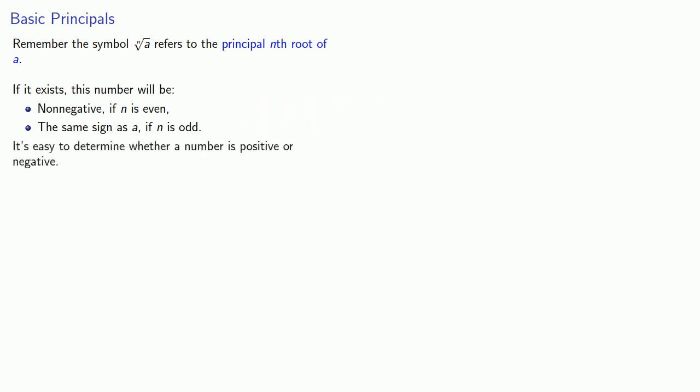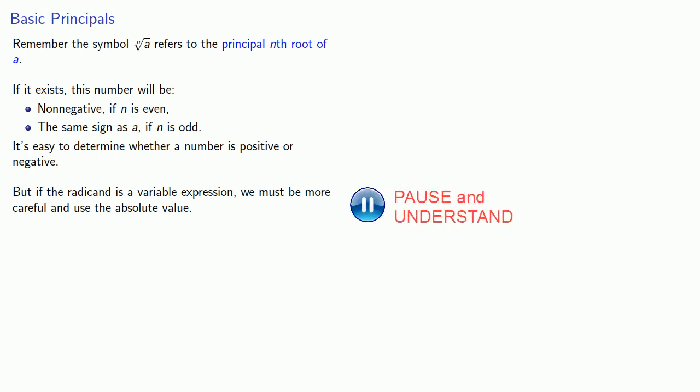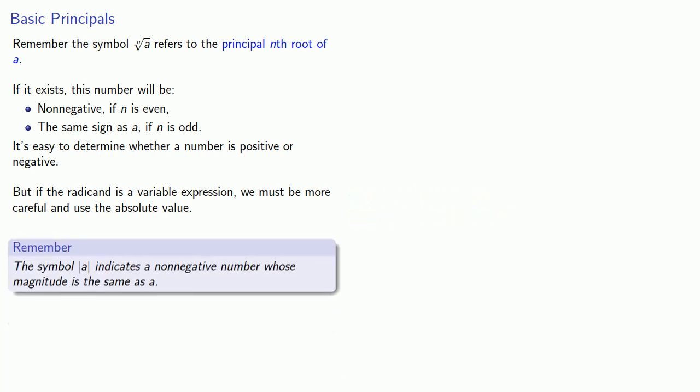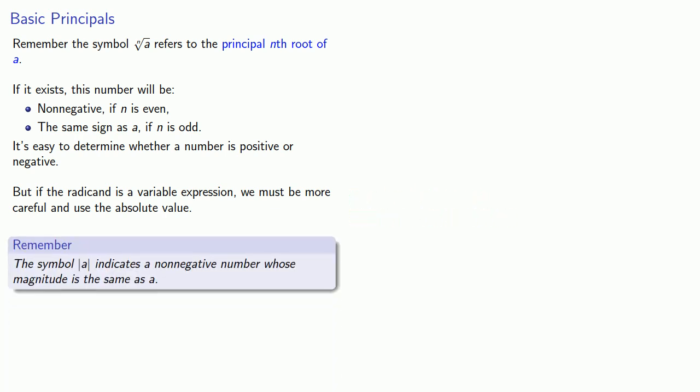It's easy to determine whether a number is positive or negative, but if the radicand is a variable expression, we must be more careful and use the absolute value. Remember, the symbol |a| indicates a non-negative number whose magnitude is the same as a.